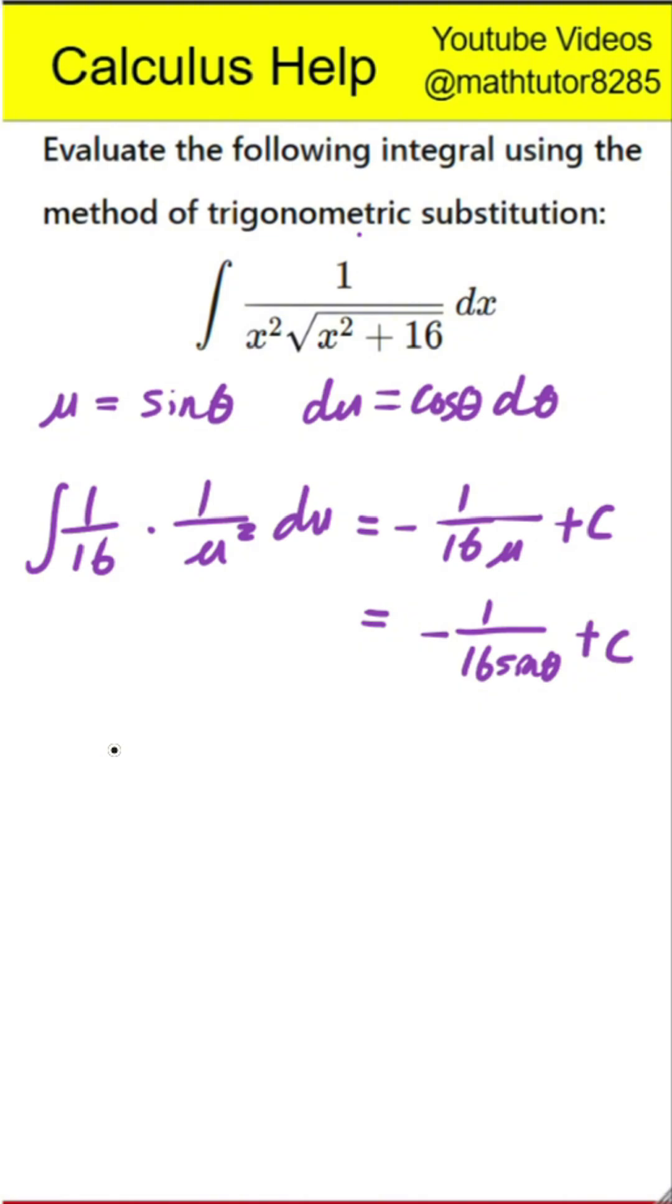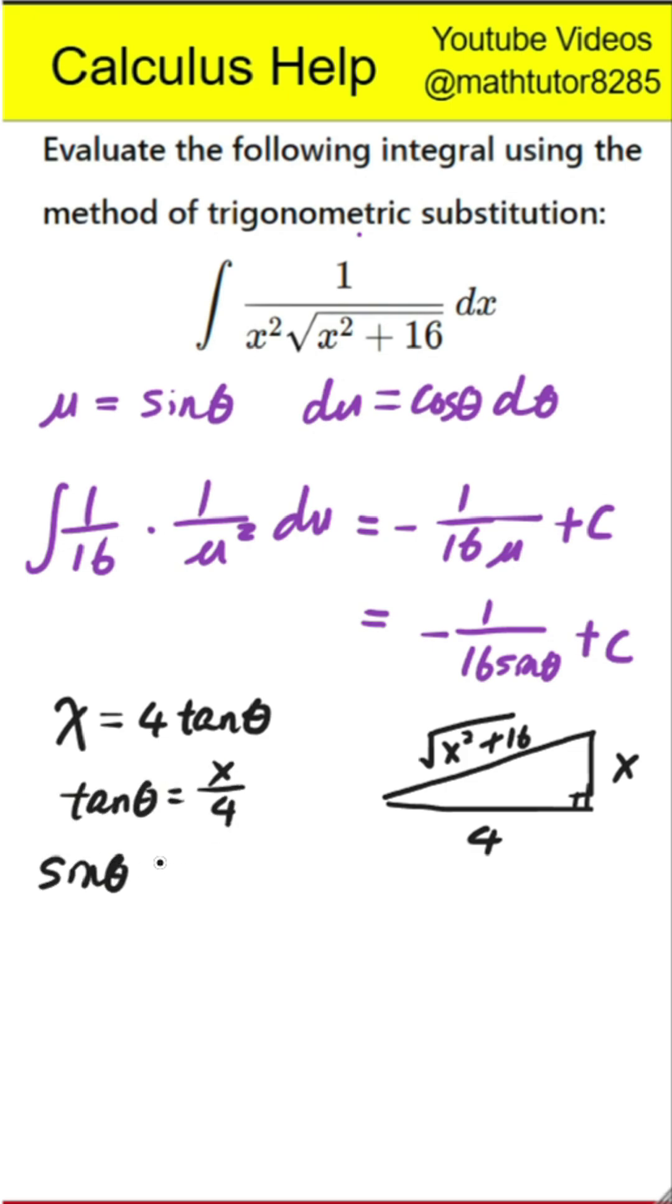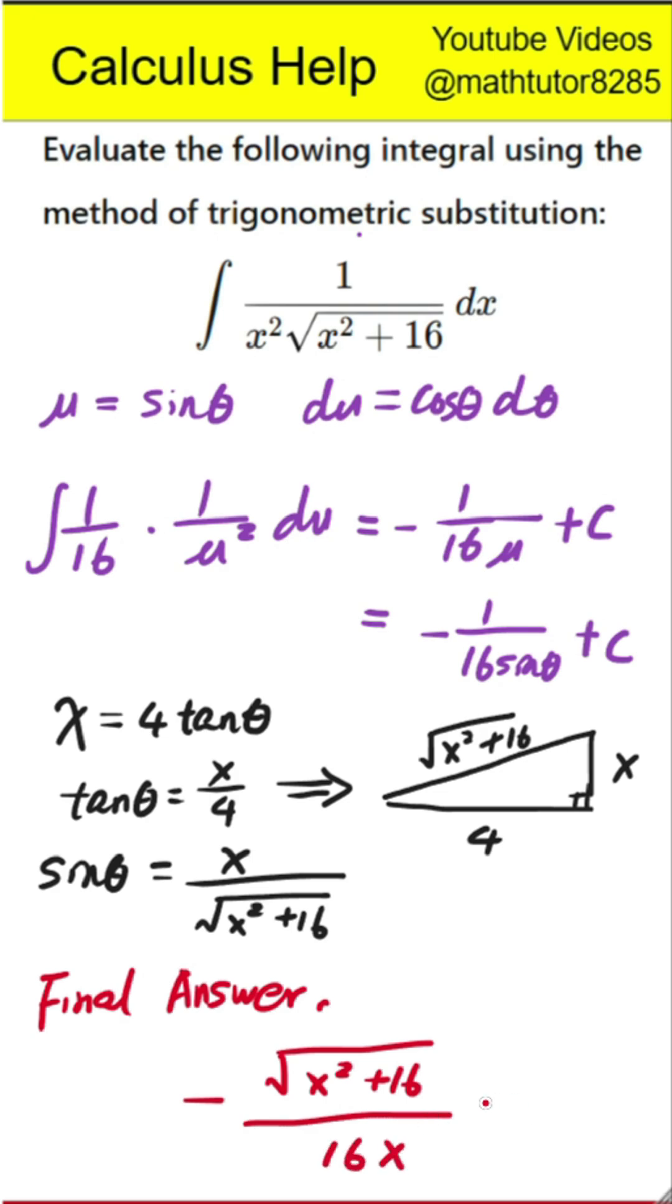Next step is to convert back to x. Since we originally said x equals 4 times tangent theta, we draw a right triangle with opposite side x and adjacent side 4. That makes the hypotenuse the square root of x squared plus 16. Therefore, sine theta is x divided by the square root of x squared plus 16. Substituting back, we get the final answer: negative 1 divided by 16x times the square root of x squared plus 16 plus a constant.